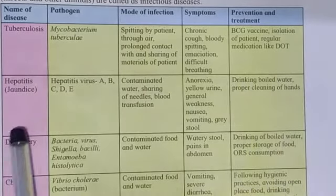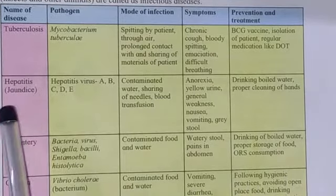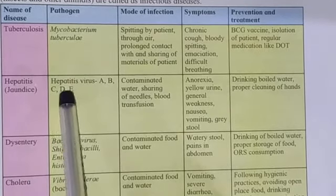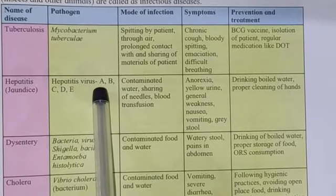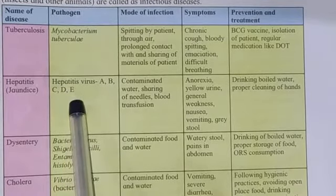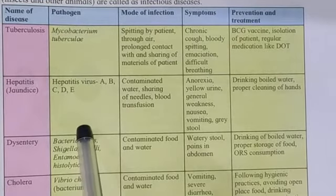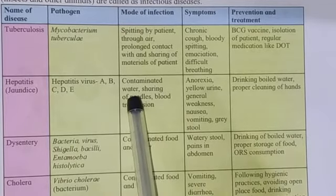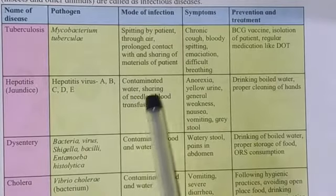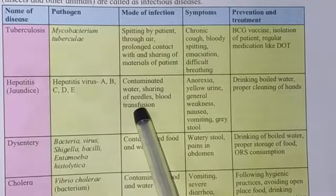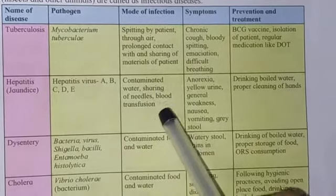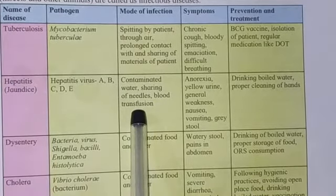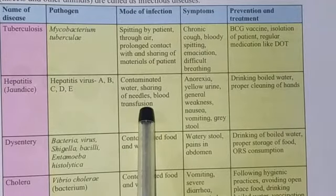Now let us see the second disease, that is hepatitis. Hepatitis is also called jaundice in simple language, or yellow fever in common language. This is caused by the hepatitis virus — A, B, C, D, or E — these are the different viruses causing hepatitis. How does it infect our body? Through contaminated water, sharing of needles, blood transfusion, etc. This virus enters our body through water, or if the needle or blood of a suffering person is used for another person, infection can occur.